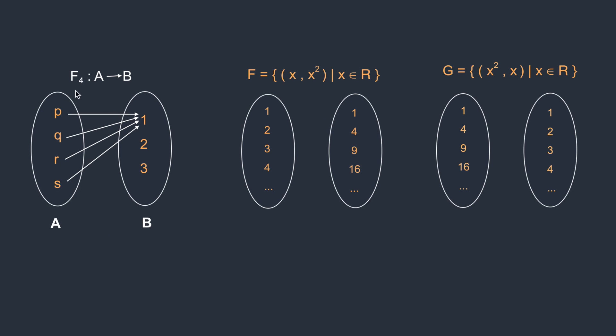Look at this, f4. p has a mapping, q has mapping, r has mapping, s has mapping. But you see that everything is mapped with only one particular element. This is definitely a function. There's no problem with it. An element in a domain cannot have two images. But an image can have multiple pre-images. There's no problem with that.